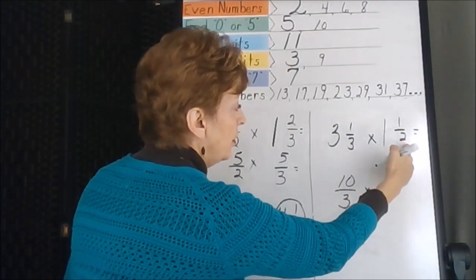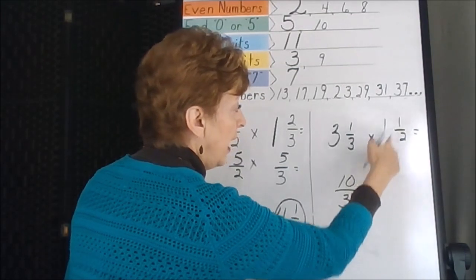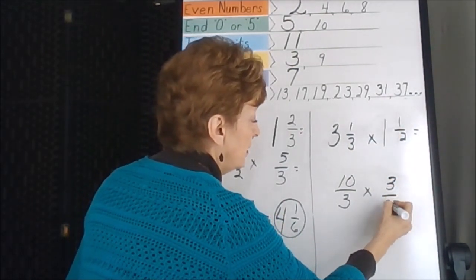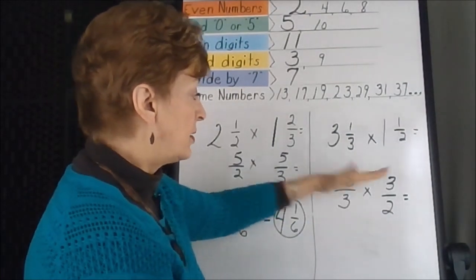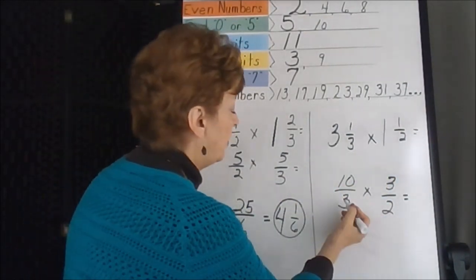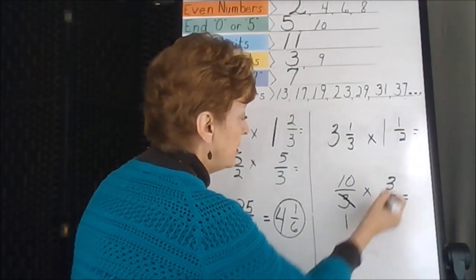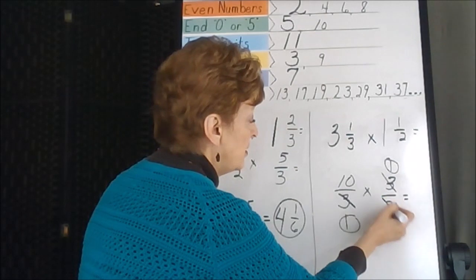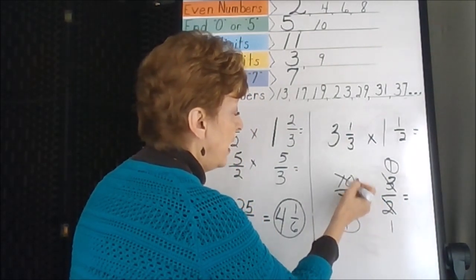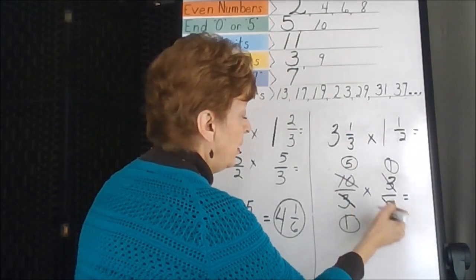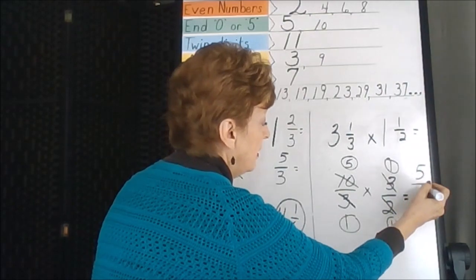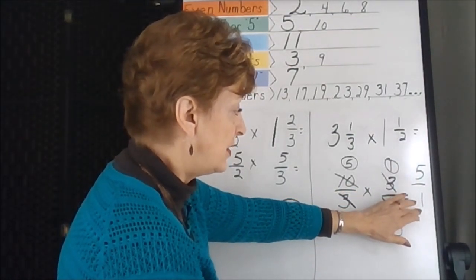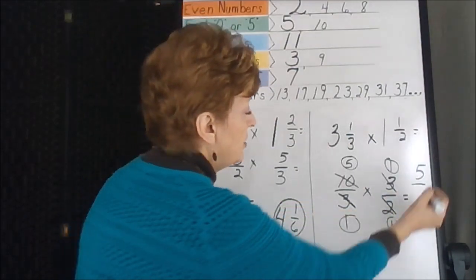Mathematically, three times the whole number: three times three is nine, plus one more is ten. For one and one half, we can get two halves out of the whole number and we already have one, so two times one is two, plus one more is three halves. Check our diagonals — the threes will work: three goes into three once, and two goes into ten five times.